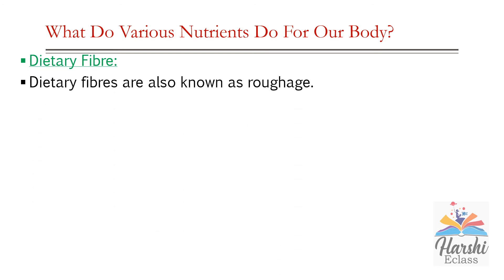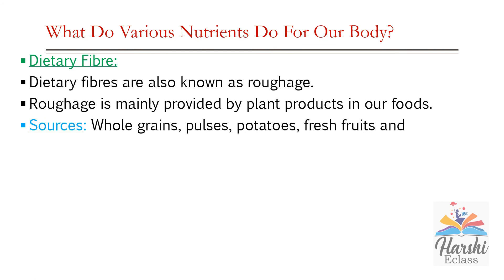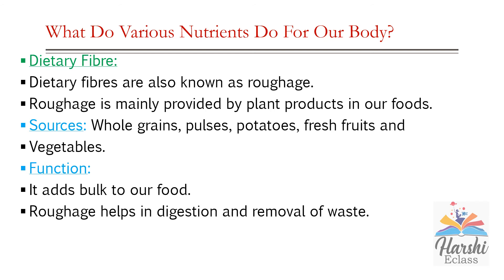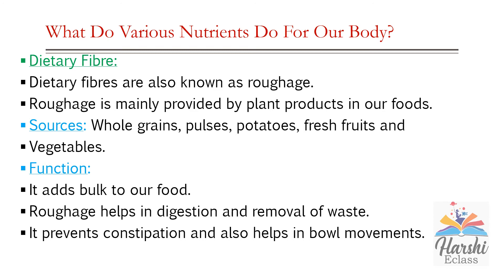Dietary fiber, also known as roughage, is mainly provided by plant products in our foods. The main sources of roughage are whole grains, pulses, potatoes, fresh fruits, and vegetables. The functions of roughage are: it adds bulk to our food, helps in digestion and removal of waste, prevents constipation, and also helps in bowel movements. Roughage doesn't contain any nutrients, but it helps in the absorption of nutrients. Roughage is not digested by humans, as humans do not contain the required enzyme for digestion of fiber, whereas animals can digest the fiber.